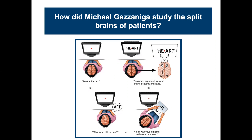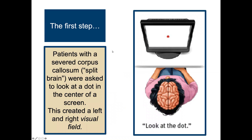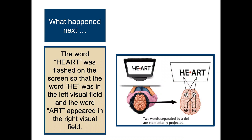One of the first and most interesting studies in this area was by Michael Gazzaniga, who studied the split brains of patients. In one of his initial studies, patients with a severed corpus callosum were asked to look at a dot in the center of a screen, creating a left and right visual field. The word 'heart' was flashed on the screen so that 'he' was in the left visual field and 'art' appeared in the right visual field.